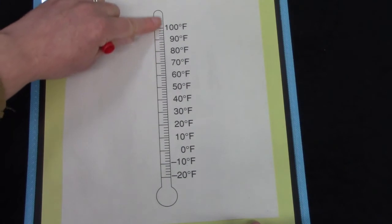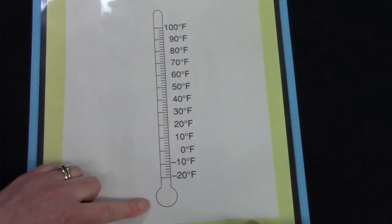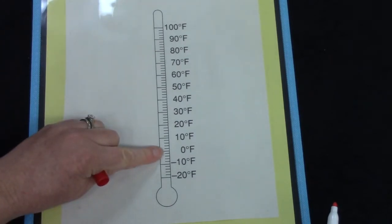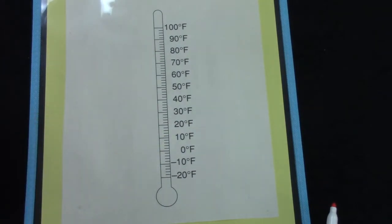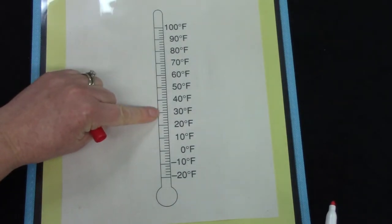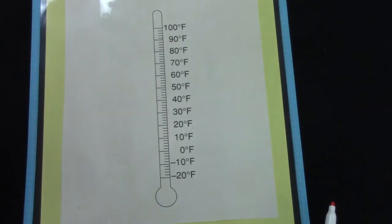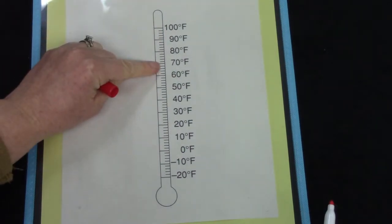If you have a paper thermometer like this one, I would like for you to take a look at it and I would like for you to point to the line for zero. Did you find it? Now I'd like for you to point to the line for 30. Did you find it? And now I'd like for you to point to the line for 70. There it is.